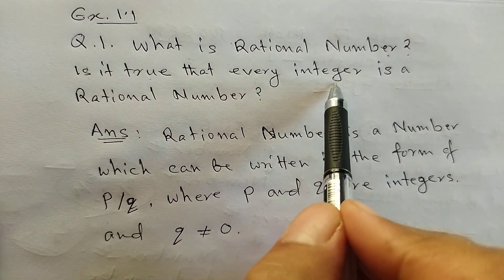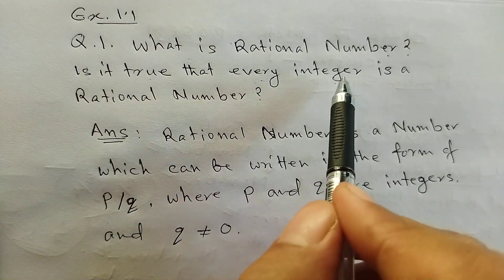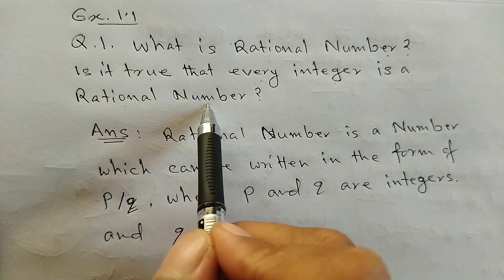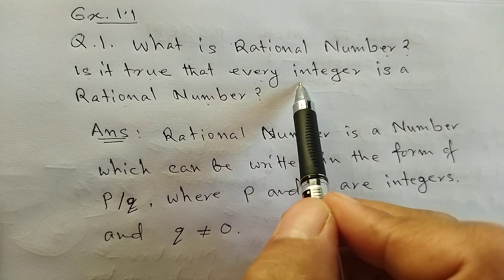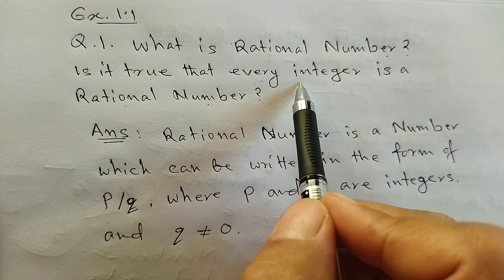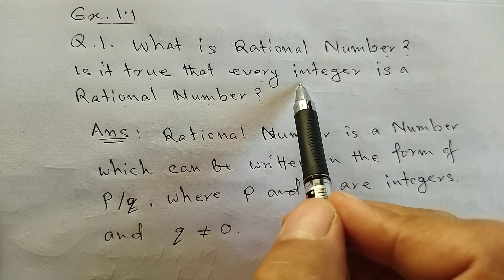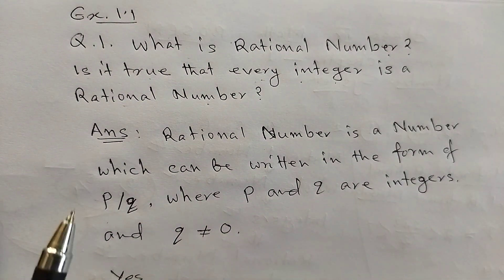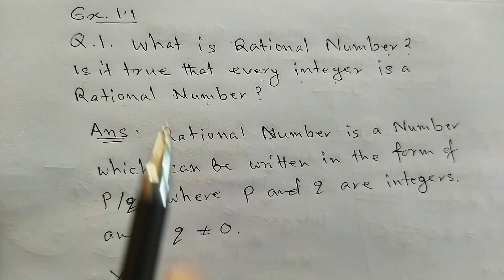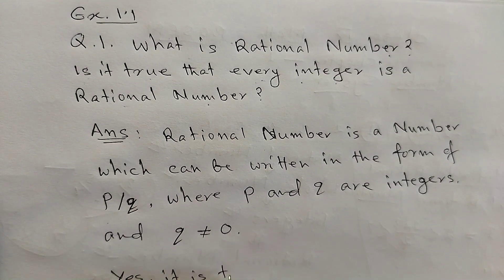Is it true that every integer is a rational number? The integer is a number which can be written in the form of P. The answer is yes, it is true.